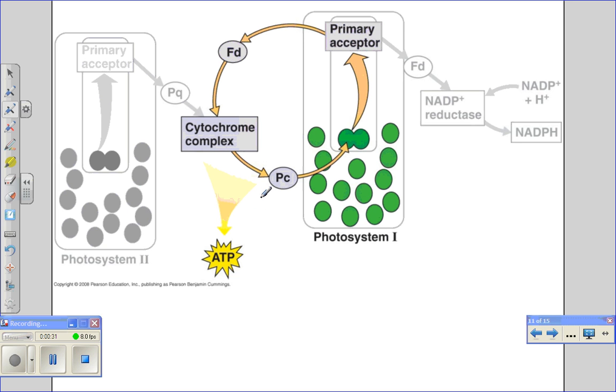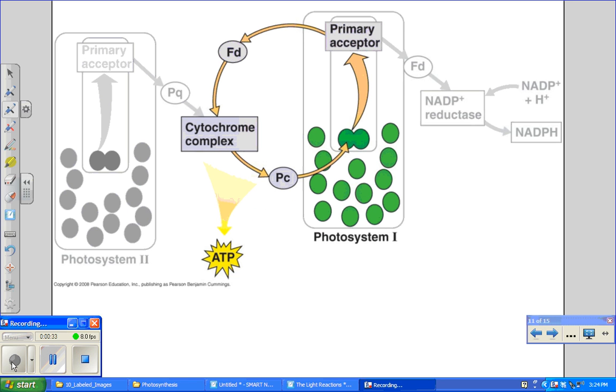In cyclic electron flow, sunlight hits P700, exciting the electrons and passing them from P700 to its primary electron acceptor. It's called the cyclic pathway because instead of going to the electron transport chain of photosystem 1, these go back to the electron transport chain of photosystem 2, to ferredoxin, to the cytochrome, and so forth.